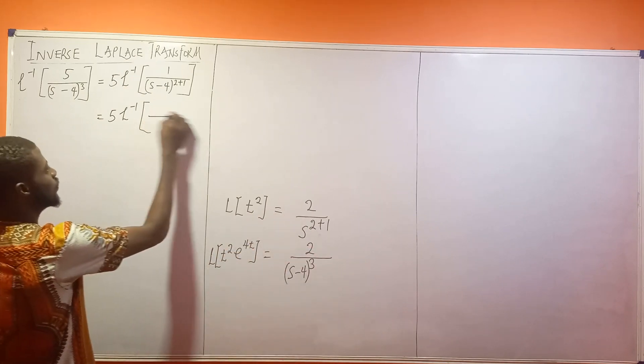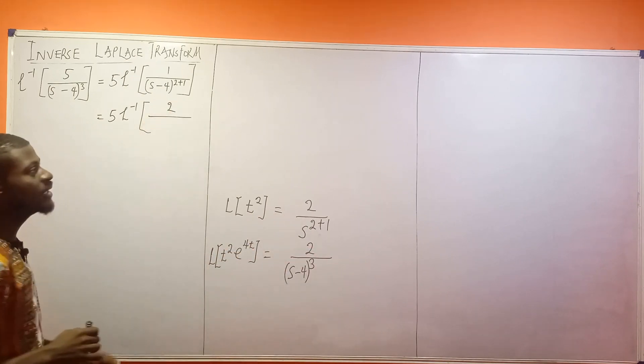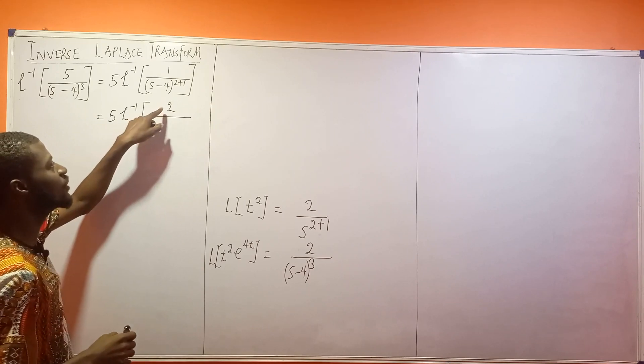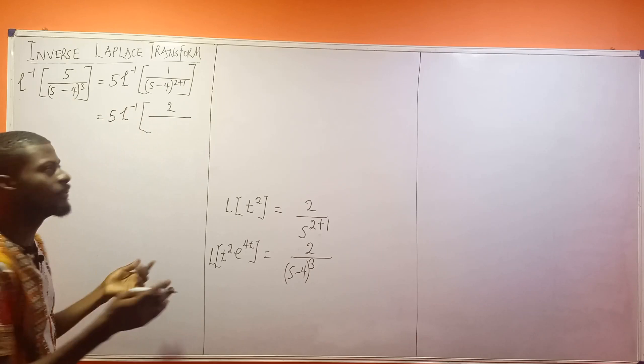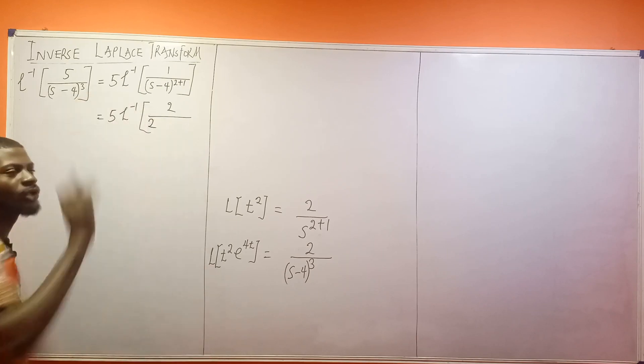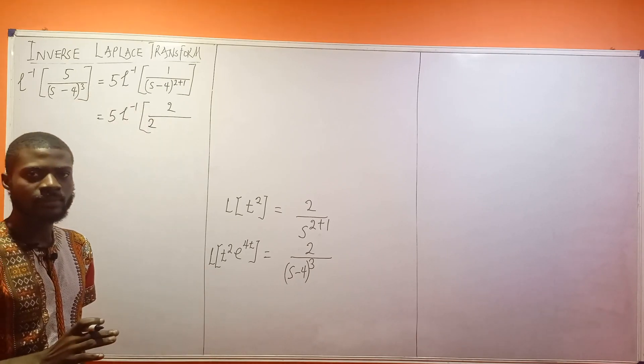So I want to put the 2 there. Now, to counterbalance this 2 that I'm adding to this expression, so that both sides will be balanced, I'm going to put 2 at the bottom also.